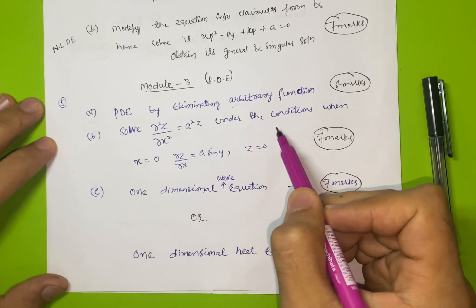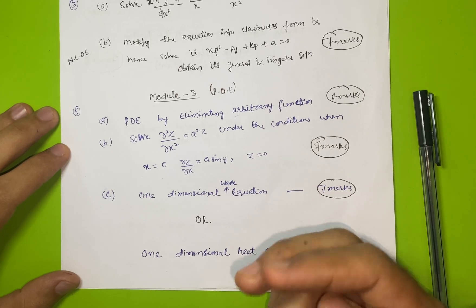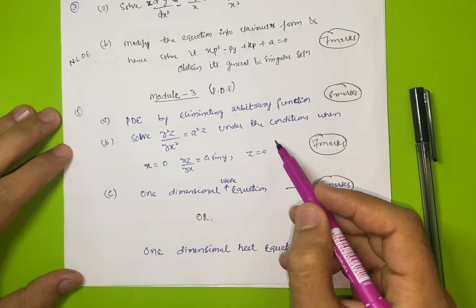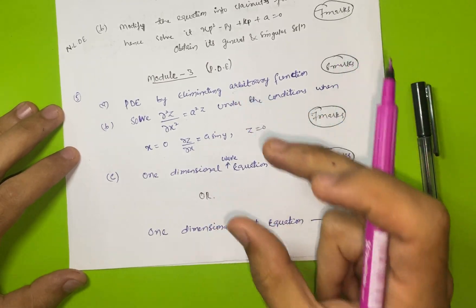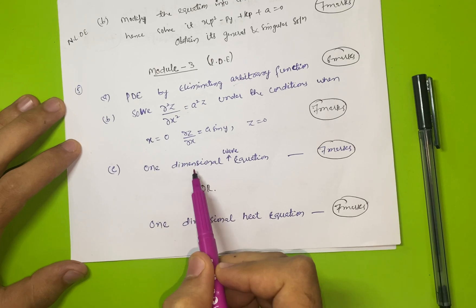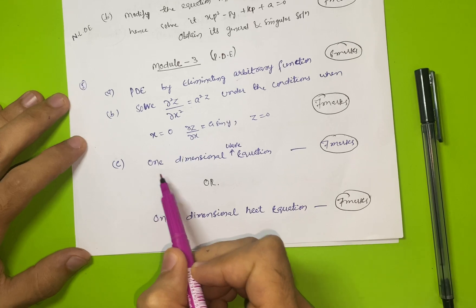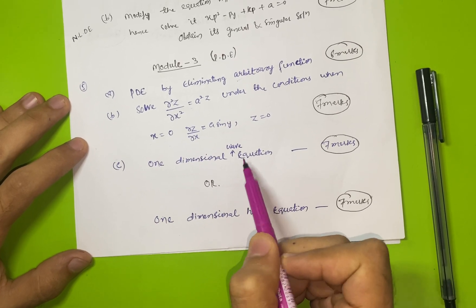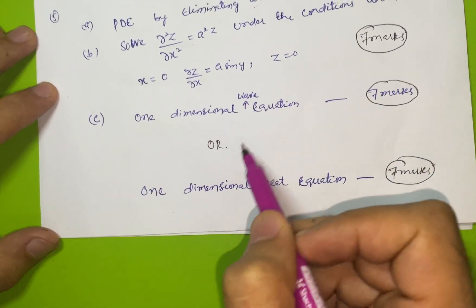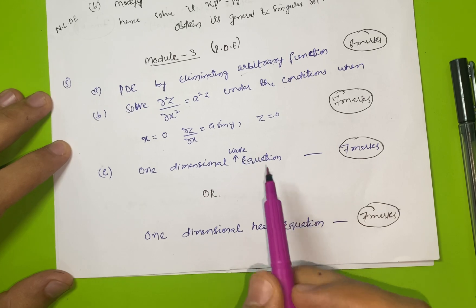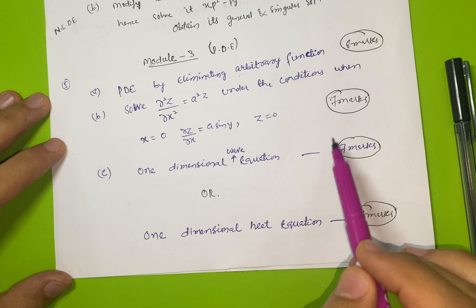You have to focus on these particular topics. The modules contain two parts, you have to focus on only one part. Check your syllabus copy, you'll find these topics. This question carries seven marks. This is the one-dimensional wave equation. The other part has one-dimensional heat equation. Out of these it's your choice to select. I prefer you focus on this particular part, then you can score 20 marks in this module.